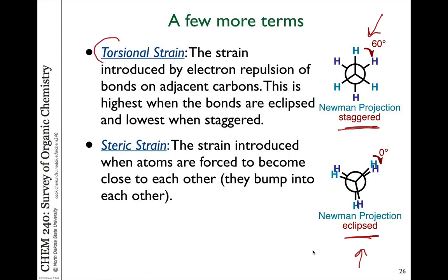The eclipsed conformation is higher energy than the staggered due to two effects. The first is torsional strain — the strain introduced by electron repulsion as electrons in the front bonds and back bonds come closer together. Like charges repel each other, so when two bonds — regions of electron density — become eclipsed, there are stronger repelling forces. Imagine two magnets with like poles: as they get closer, you feel the repulsion more. This torsional strain makes the eclipsed conformation higher energy and less stable.